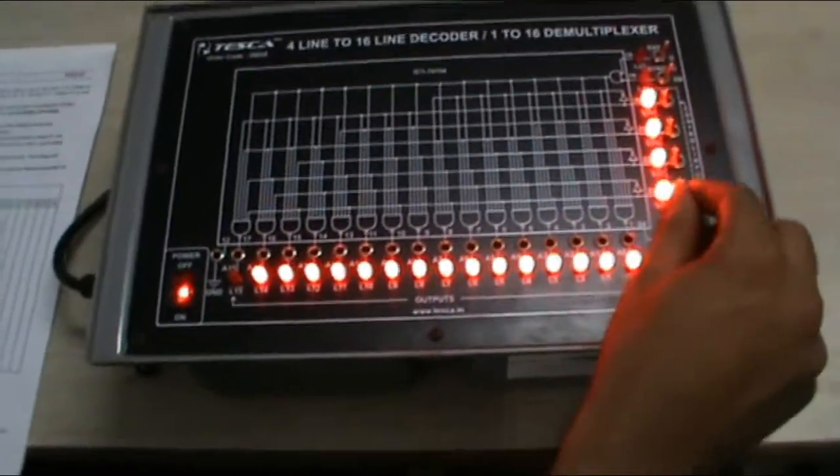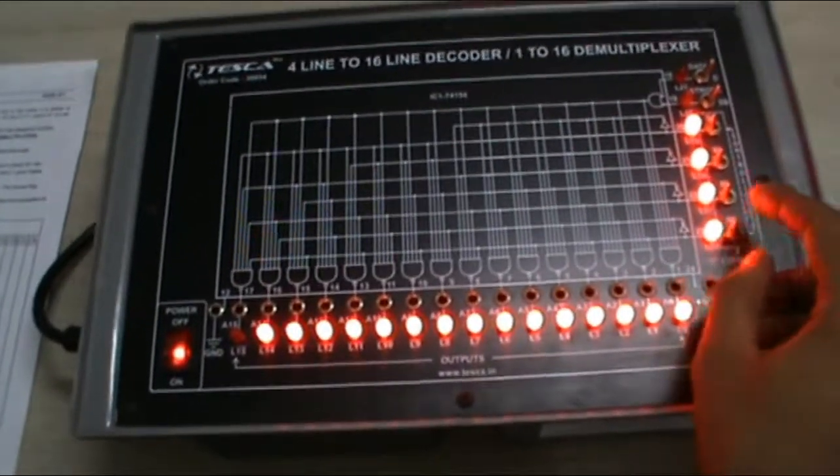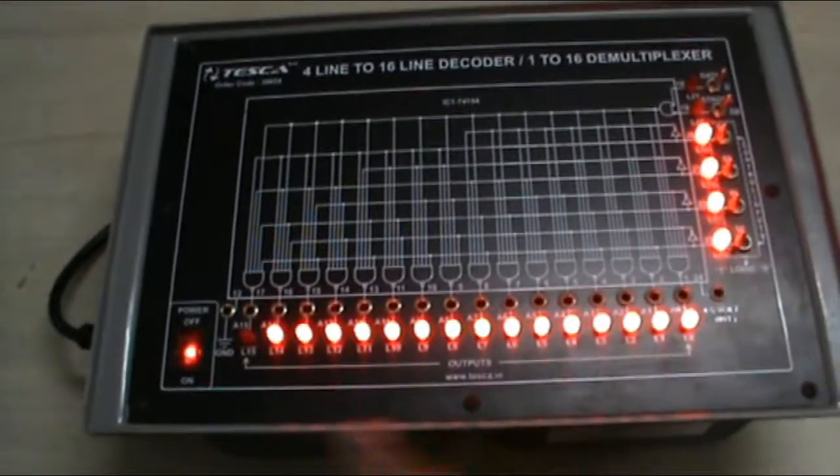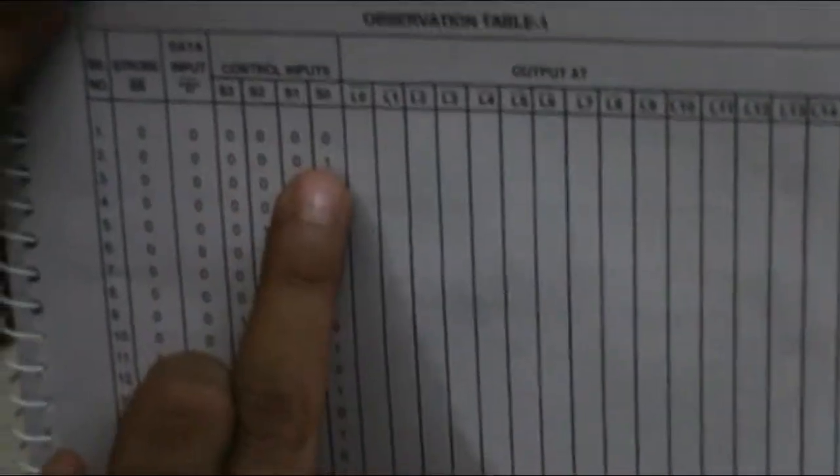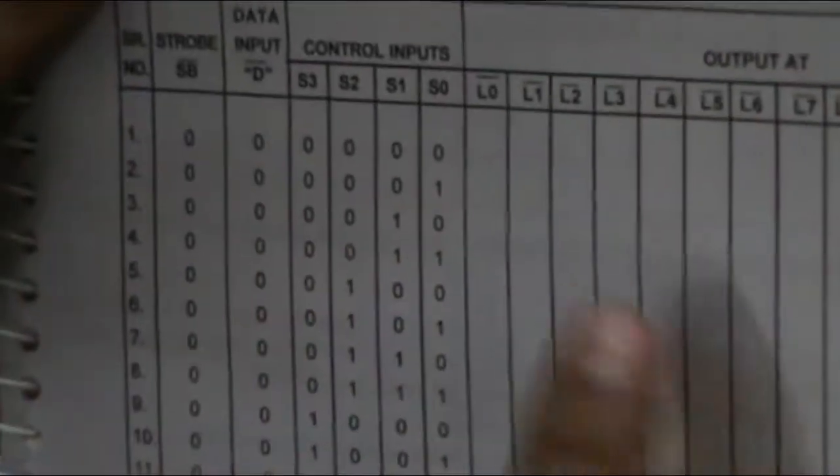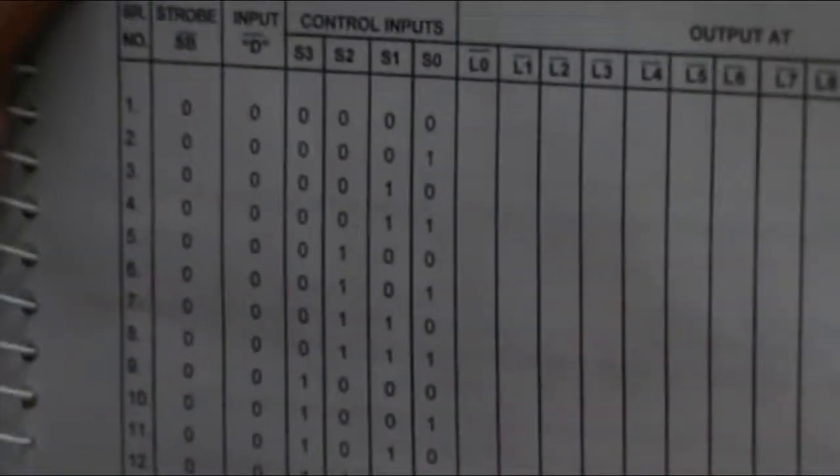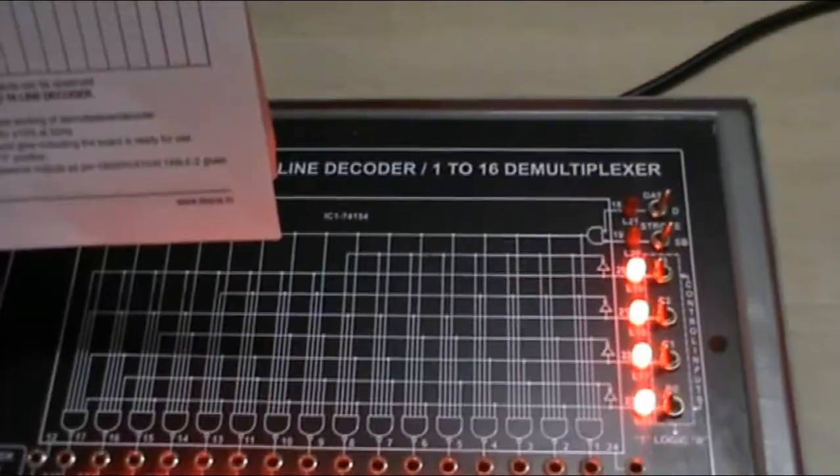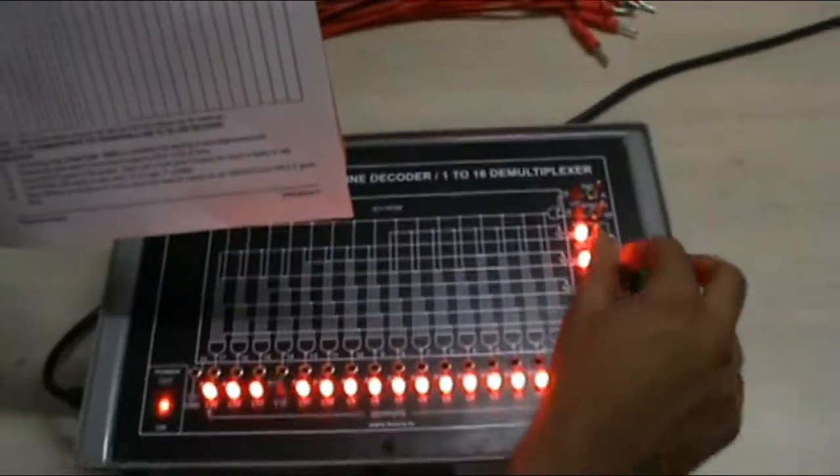Now make the positions of the switch according to the manual, according to the table in the manual. As you can see there are various patterns of S0 to S3 and we will get the desired output. Keep the strobe SB switch to 0 level and data input D to 0 level.